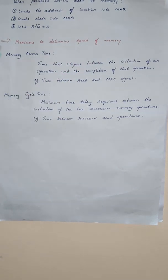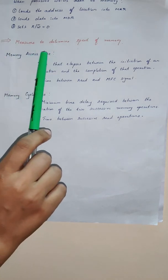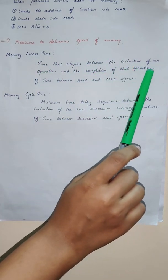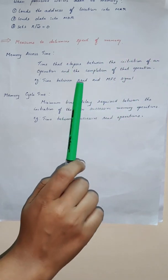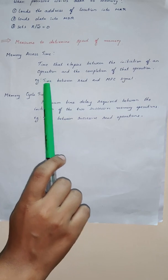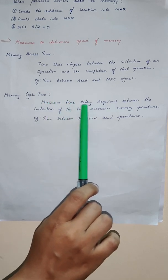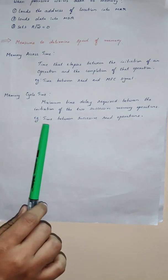Next we will see certain measures which determine the speed of a memory. There are two measures: memory access time and memory cycle time. Memory access time is the time that elapses between initiating an operation and completion of that operation. For example, the time between the read signal and the memory function complete signal given by the memory is called memory access time. Memory cycle time is the minimum time delay required between initiating two successive memory operations — the minimum time between two read operations.